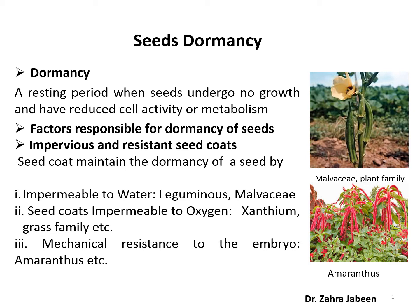There are different factors responsible for dormancy of seed. The first one is an impervious or resistant seed coat. The seed coat maintains the dormancy of the seed by being impermeable to water — for example, seeds of the families Leguminosae and Malvaceae.